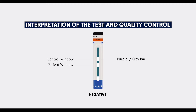The appearance of one purple or grey bar in the control window of the strip, labelled control, and no purple or grey bar in the patient window of the strip, labelled patient, indicates the TB-LAM result is negative.